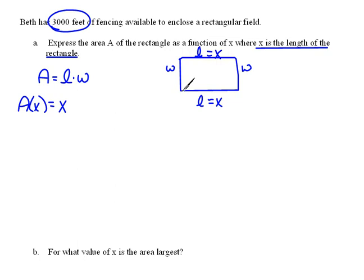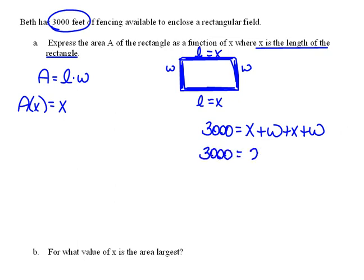So that means that 3,000 should equal this side here, plus this side, so that would be X plus W, and then this side, and this side also, so plus another X plus another W. This is our perimeter formula, 2 lengths plus 2 widths, so that would be 3,000 equals 2X plus 2W.